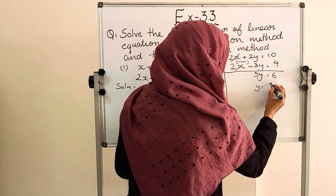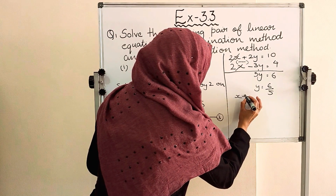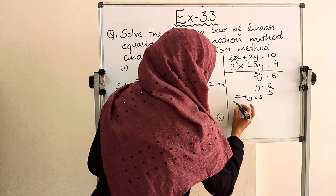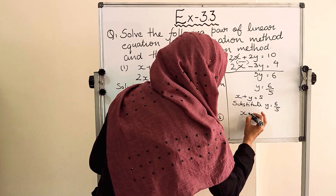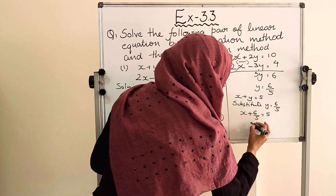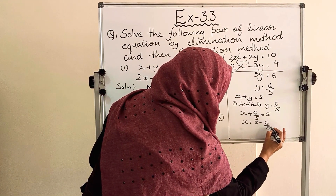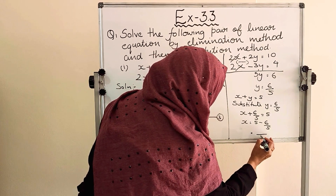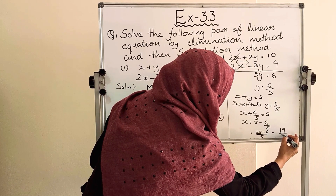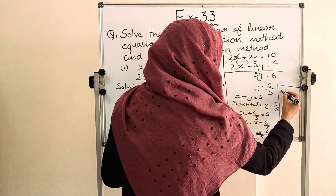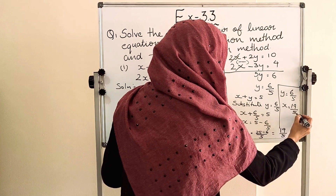So we got 5y is equal to 6, and y is equal to 6 by 5. Next, let us find x. From equation number 1, x plus y equals 5. Substituting y equals 6 by 5: x plus 6 by 5 equals 5, so x equals 5 minus 6 by 5. Taking LCM with denominator 5: 25 minus 6 by 5 gives x equal to 19 by 5. So we got y equals 6 by 5 and x equals 19 by 5. This is our answer.